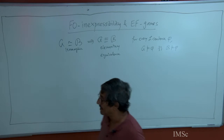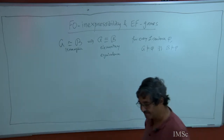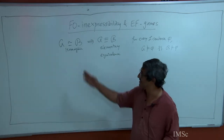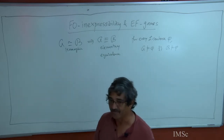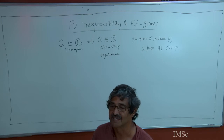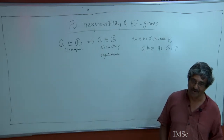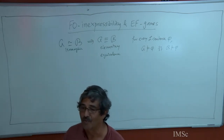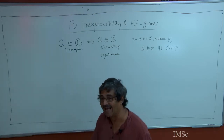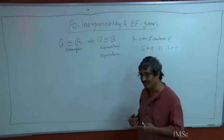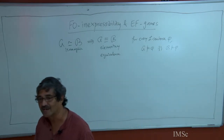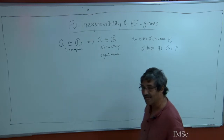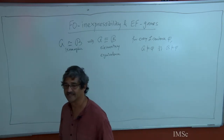Talking about isomorphism, we first talked about homomorphisms. Homomorphisms are basically maps that preserve the structure — a map from the domain of A to the domain of B that preserves the interpretation of constant symbols, function symbols, and predicate symbols. Homomorphisms preserve quantifier-free formulas; if injective, you can add equality; if surjective as well, then it preserves quantifiers.